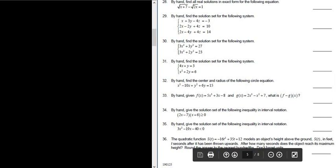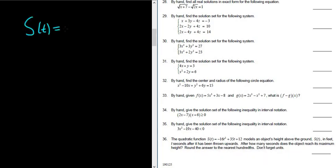Let's do problem number 36. The quadratic function s(t) = -16t² + 35t + 12 models an object's height above the ground s(t) in feet t seconds after it has been thrown upwards. After how many seconds does the object reach its maximum height? Round to the nearest hundredths, don't forget units.